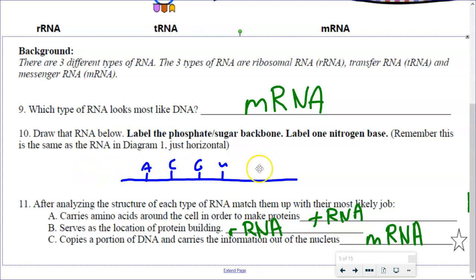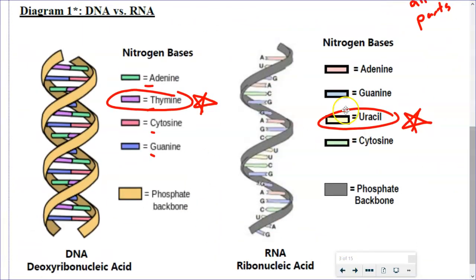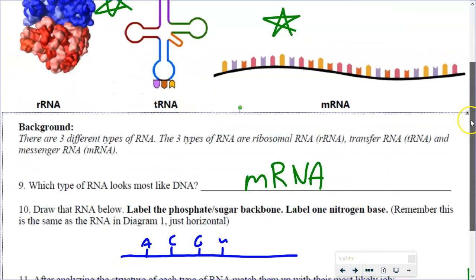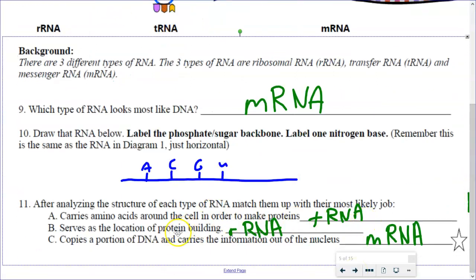For our picture here, you can go ahead and draw a picture for number 10 — you can copy this if you want, just make it straight with the letters on one side. The one that carries the amino acids to make proteins is the transfer RNA. The location of building is going to be the ribosomes. And the messenger RNA is the one that carries the information. We want you to know what the jobs of these three are and what they look like.